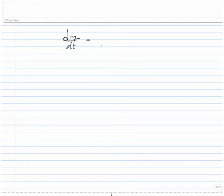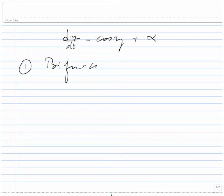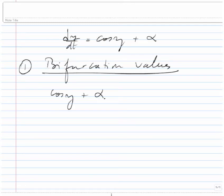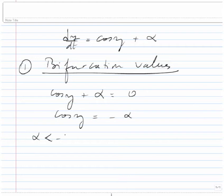We have the one-parameter differential equation dy/dt = cos(y) + α. The first question is about finding the equilibrium (verification) values. We look for constant solutions by setting cos(y) + α = 0, so cos(y) = -α. As long as α is between -1 and 1, solutions exist. If α is less than -1 or greater than 1, there are no solutions.